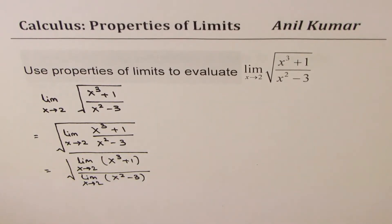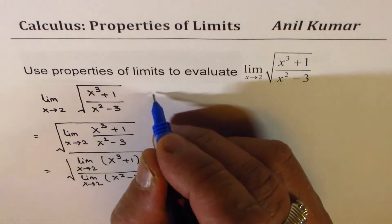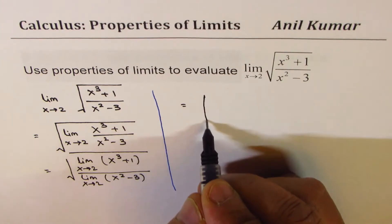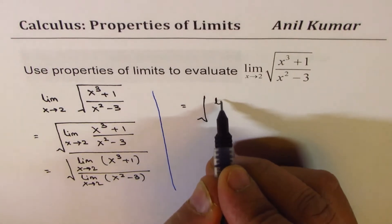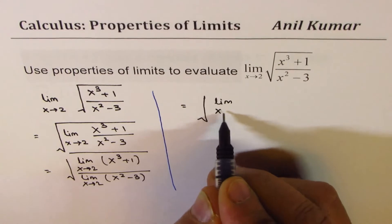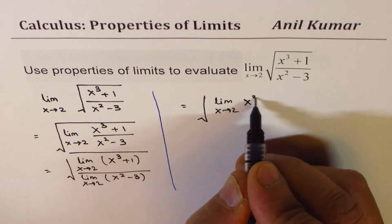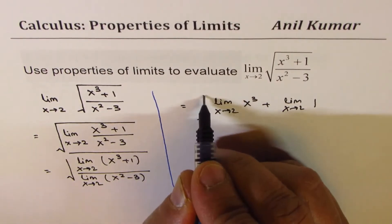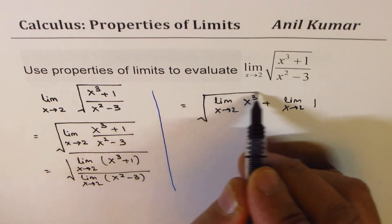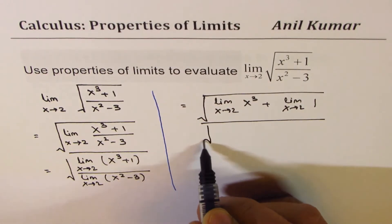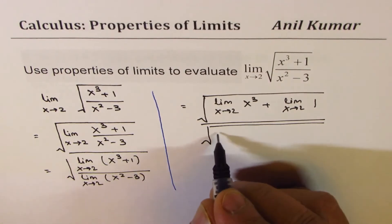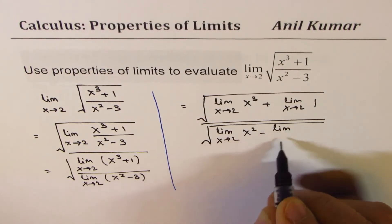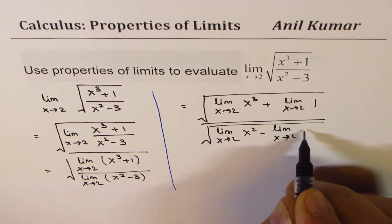Now on the right side, I can write this as: limit x approaches 2 for x cubed, plus limit x approaches 2 for the constant 1, all over limit x approaches 2 for x squared, minus limit x approaches 2 for constant 3.